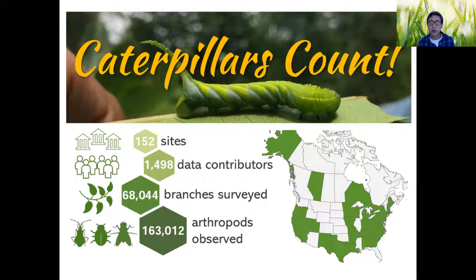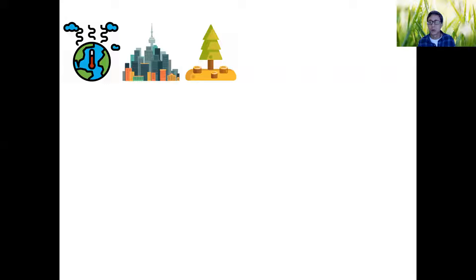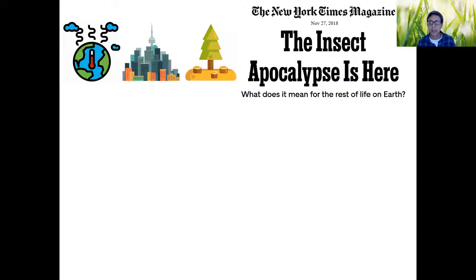We want to know whether things are worse than they used to be in terms of how many bugs we're finding in our backyards and parks. There have been some stories about insect declines due to global change, urbanization, and land use change — some alarming headlines over the last several years: 'the insect apocalypse,' 'insectageddon,' et cetera.